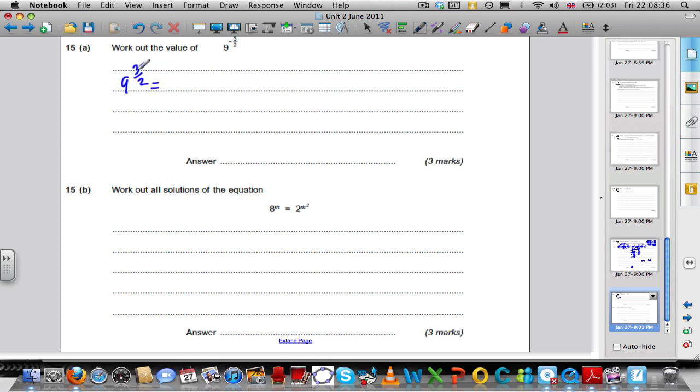We work that out. We change it into a unit fraction, so we work out 9 to the 1/2 and then we cube it. We always do that. 9 to the 1/2 means the square root of 9, and we raise that to the power of 3. The square root of 9 is 3, and 3 cubed is 27.